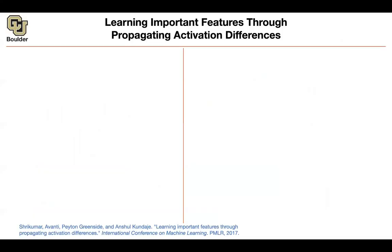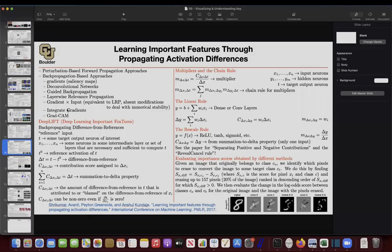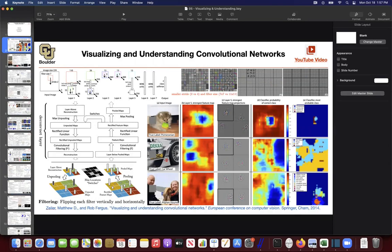What methods have we covered so far for visualization and understanding? We learned about perturbation-based forward propagation approaches. We saw this in the first paper we covered for visualization and understanding — the idea that you mask out some portions of your image, push it through your neural network, look at its predictions or intermediate layers, and keep sliding this mask over your image to see what's happening and where your neural network is looking.